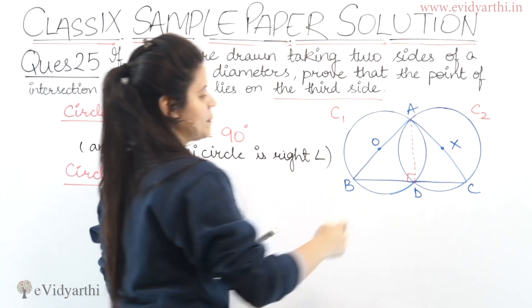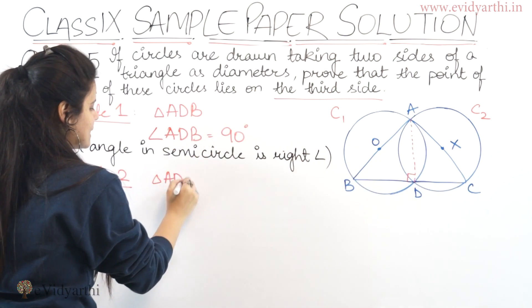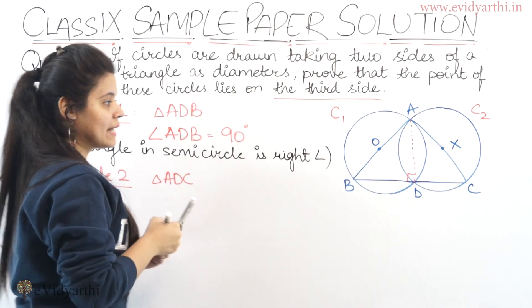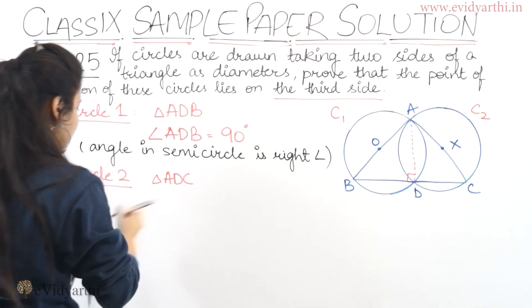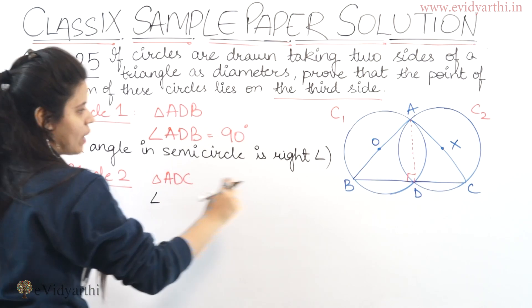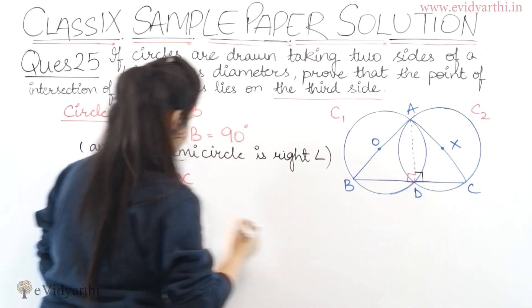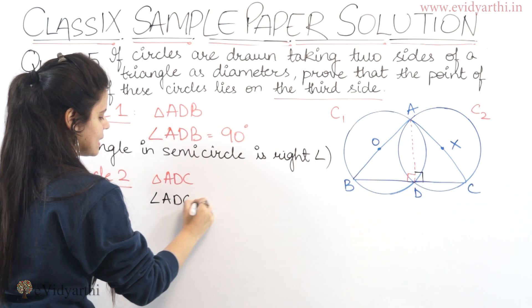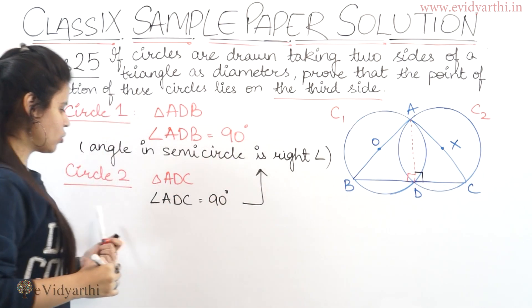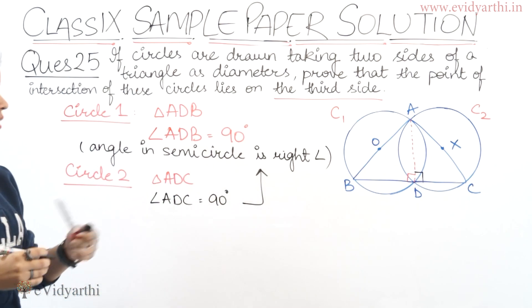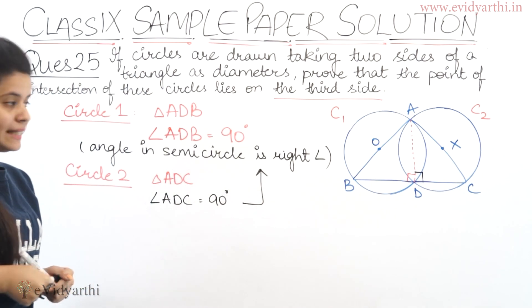In Circle 2, the triangle is ADC. Again, this is also in a semicircle. Therefore, angle ADC equals 90 degrees. The reason is the same: the angle in a semicircle is a right angle.